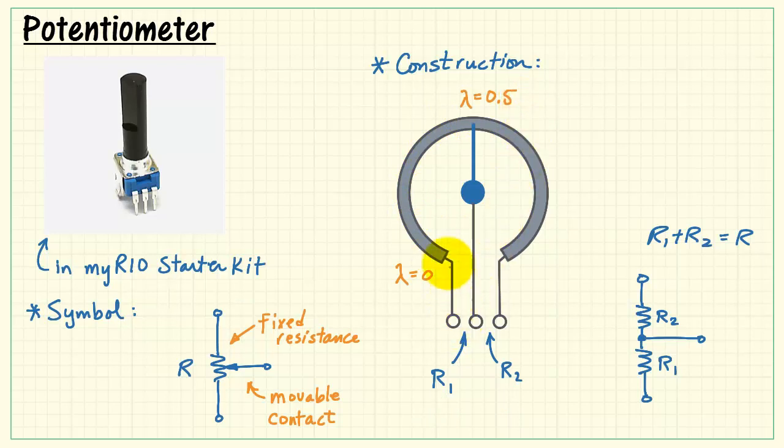When lambda is 0.5, or when the wiper is at the midpoint position, then R1 is equal to the fixed resistance R divided by 2, and R2 is the same value, just due to the symmetry of the situation.